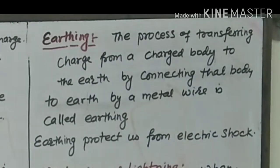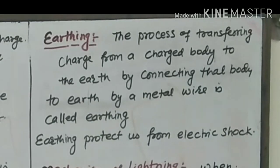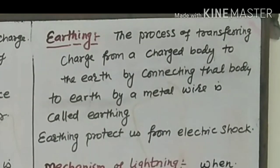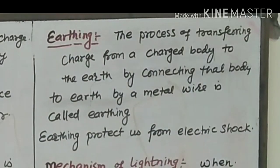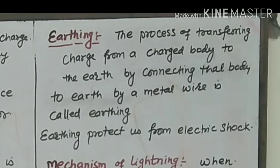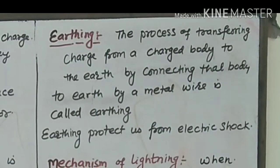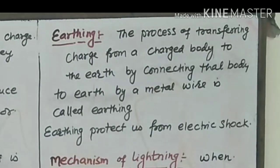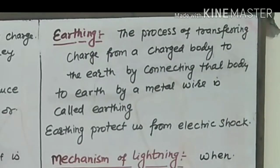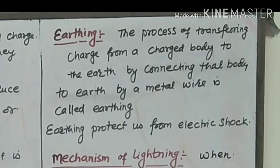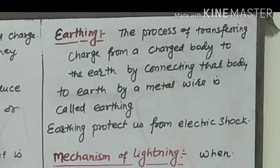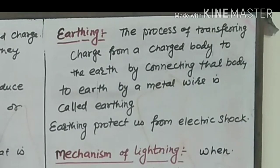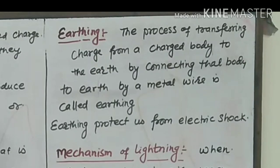To make a charged body discharge and to make it safe for us, we connect the body to the earth using a metal wire. This is called earthing. The process of connecting a body to earth by means of a metal wire to transfer its charge to earth is called earthing.